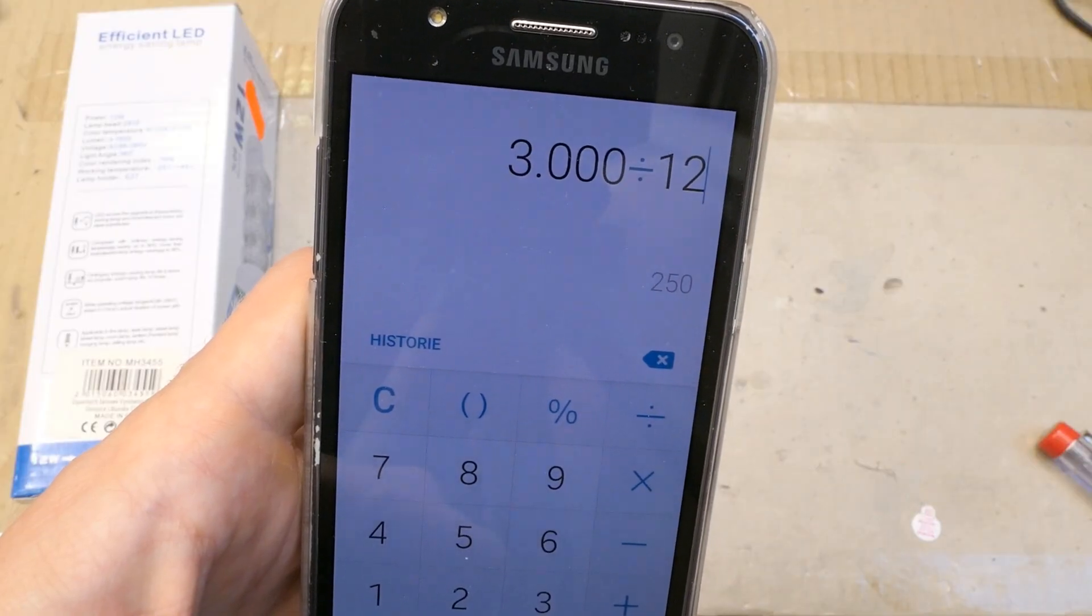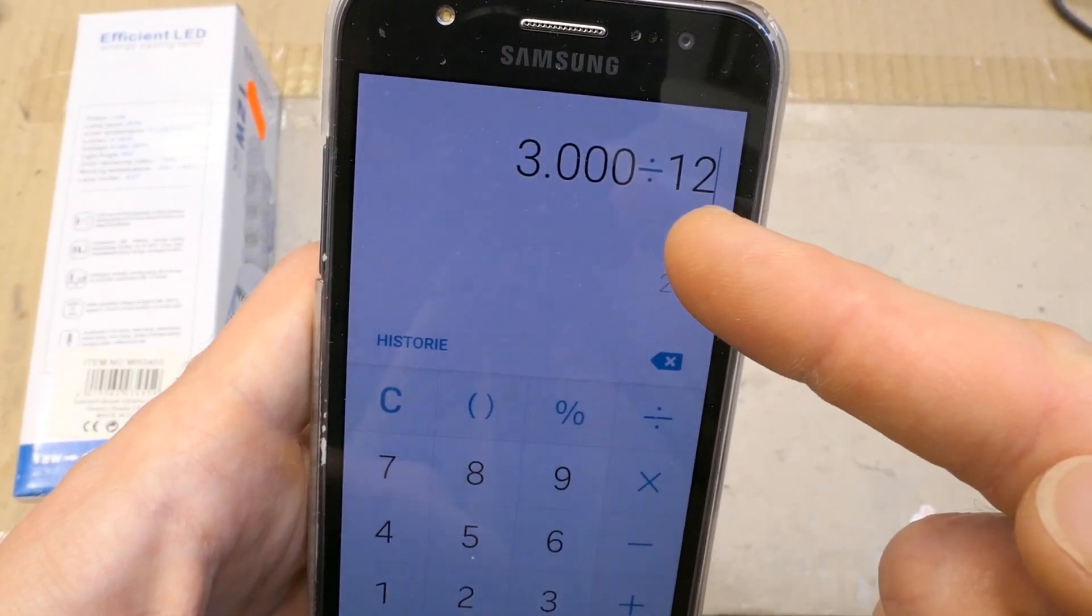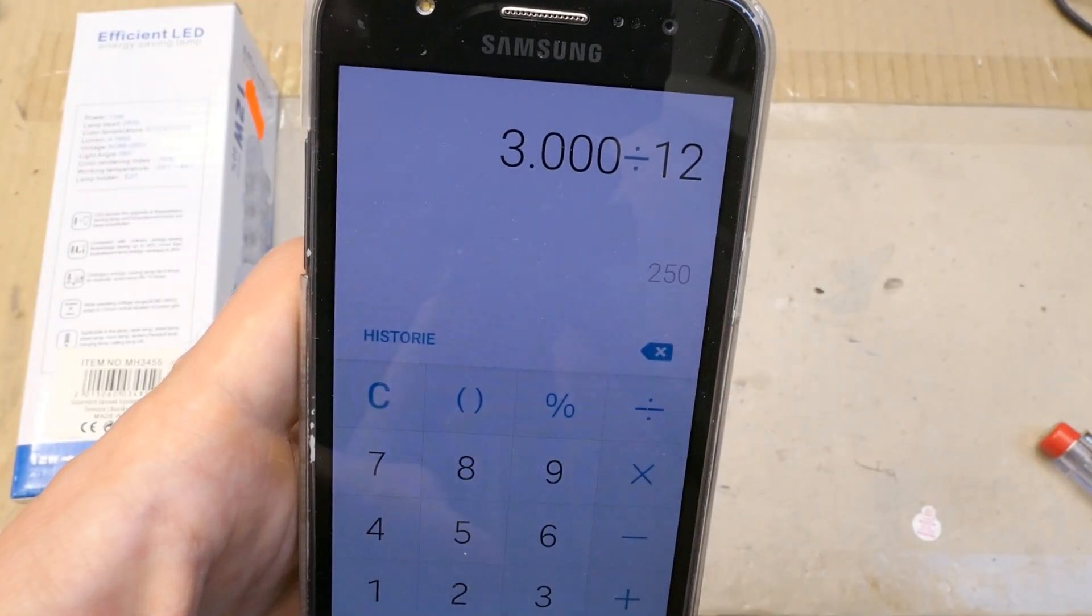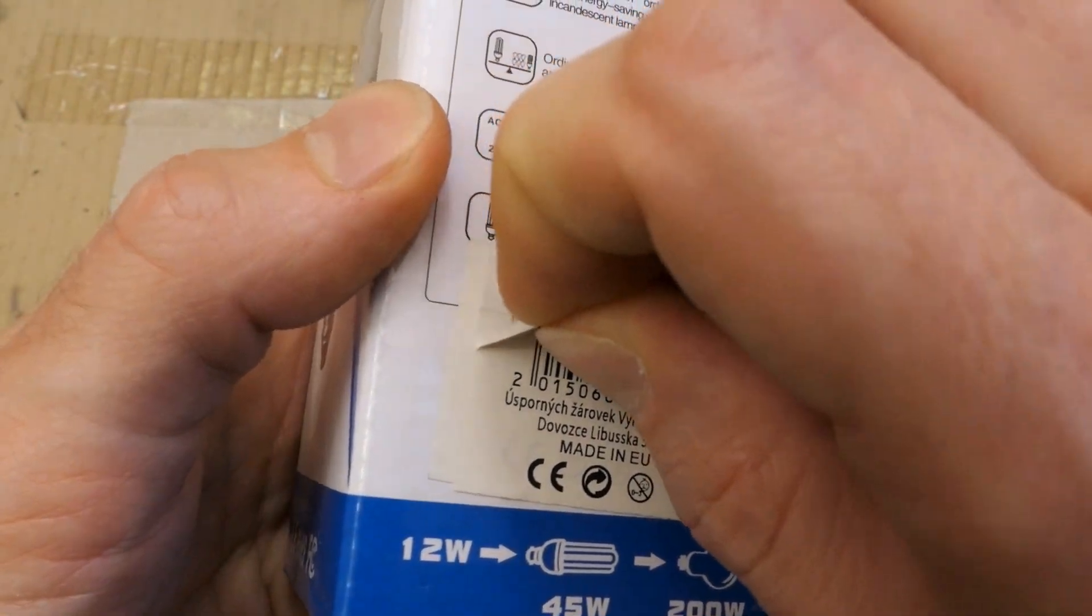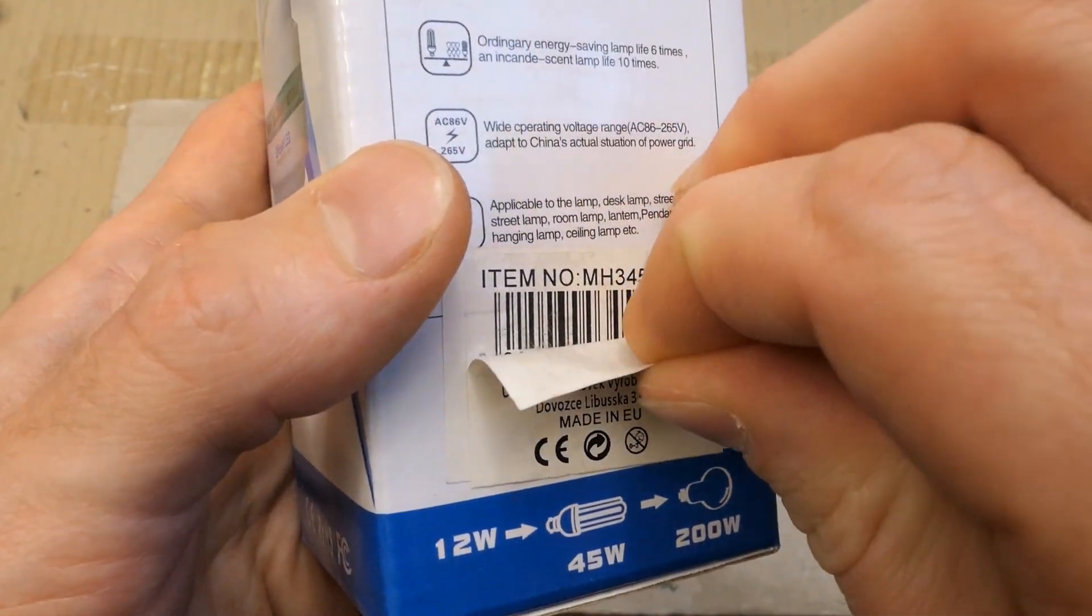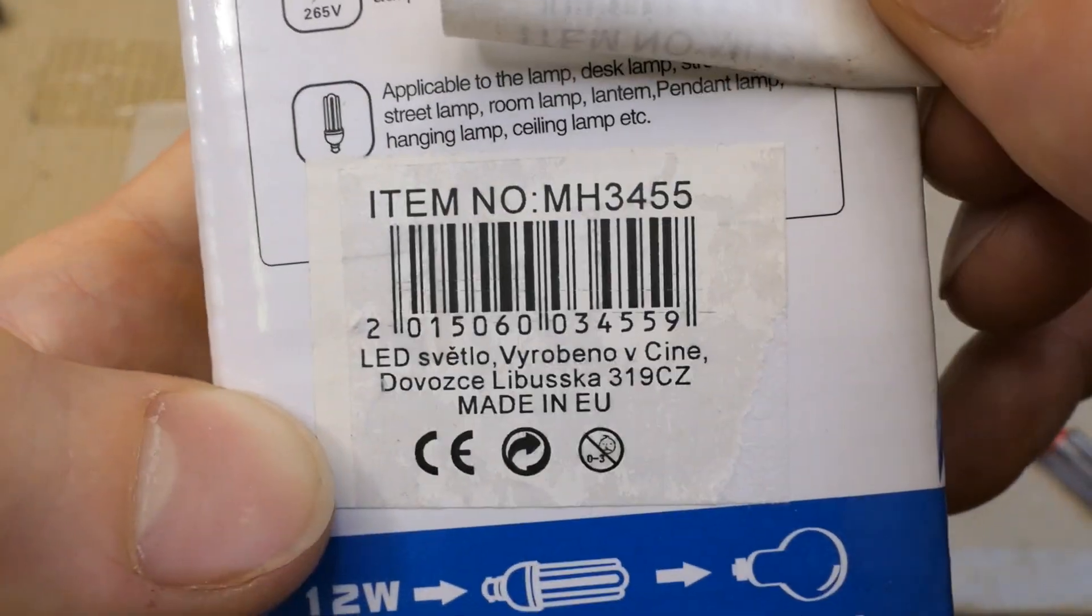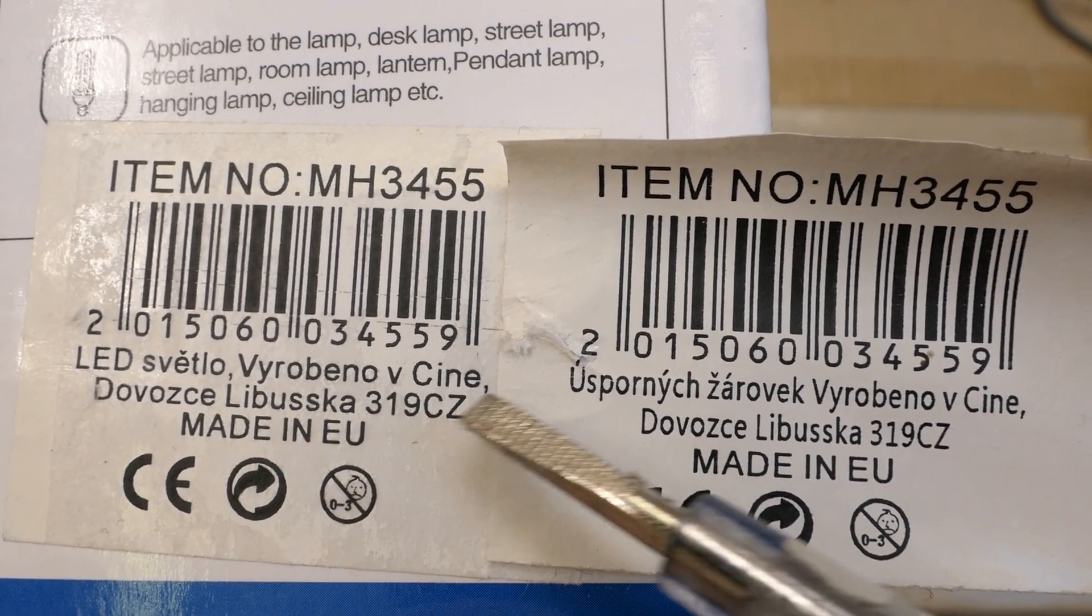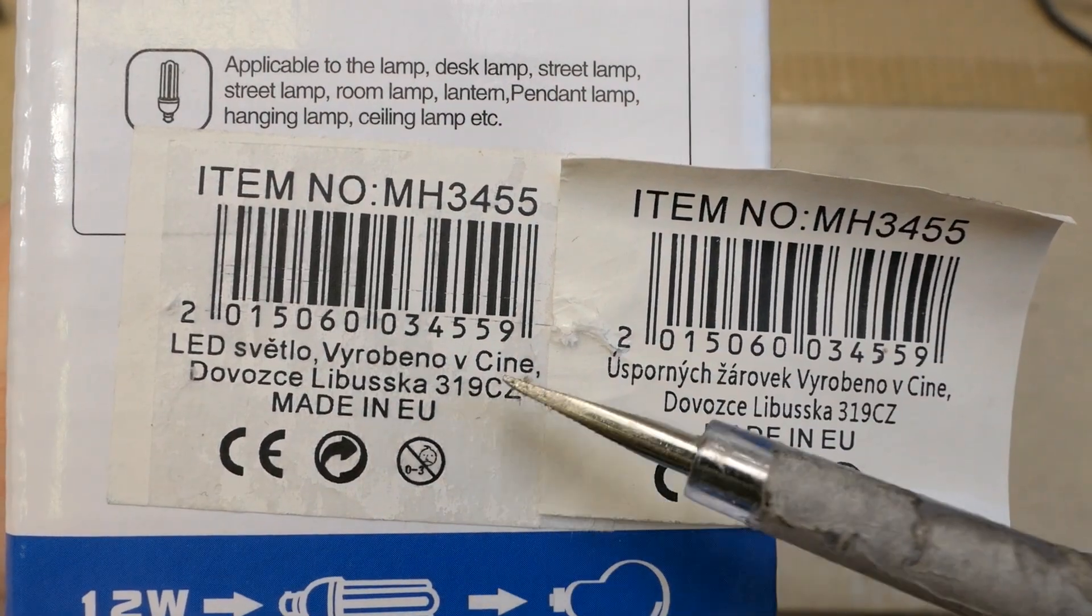1600 lumens and 12 watts would be 133 lumens per watt. But 1600 lumens definitely doesn't replace a traditional 200 watt lamp. If it really replaced a 200 watt tungsten lamp, then it would have to have about 3000 lumens light output divided by 12 watts would be about 250 lumens per watt efficiency, which is unheard of in consumer LEDs. And there is actually a label over another label. I will try to remove it. So under this label there is a slightly different label. But it's really ridiculous because both of the labels say made in China in Czech, but they say made in EU in English.